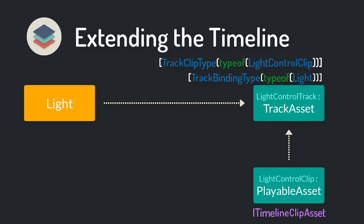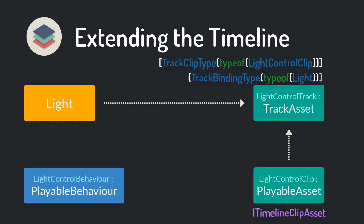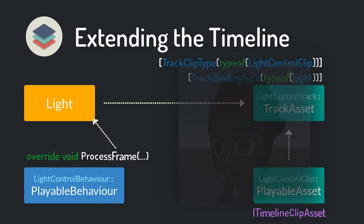So far we've only built up the structure for our timeline extension — the behavior of the clip is still missing, so it doesn't yet know how to manipulate the light object. Therefore we need to create a behavior script which inherits from PlayableBehavior. If your clips cannot be blended together, you can overwrite the ProcessFrame method directly in the behavior script, and within that method you can manipulate the light object while the timeline is played.